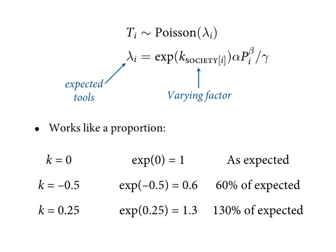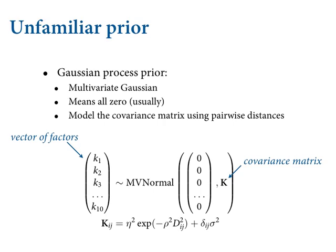We're going to fit this using the matrix of all islands, which will hold our correlated effects. Some islands will get inflated because they're near islands with lots of tools; others will get deflated. These inflations and deflations are stored in k. The fun part — the Gaussian process part — is where we get these k's: from a 10-by-10 multivariate normal distribution. This is the Gaussian part of Gaussian process. You have this big prior with all the varying effects, one k for each of the 10 island societies.